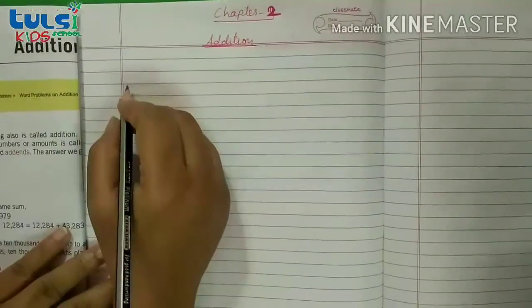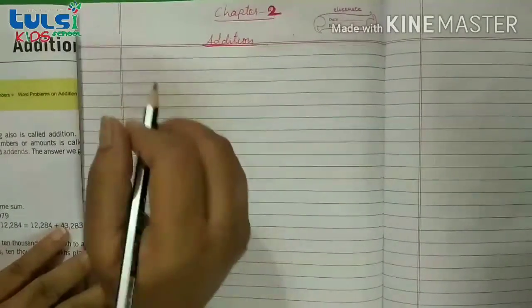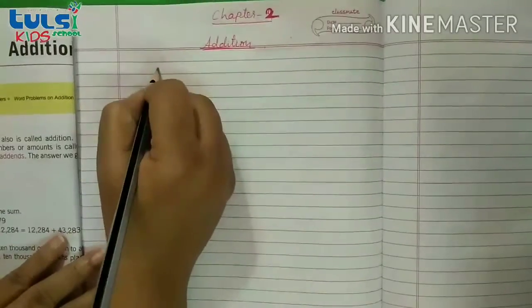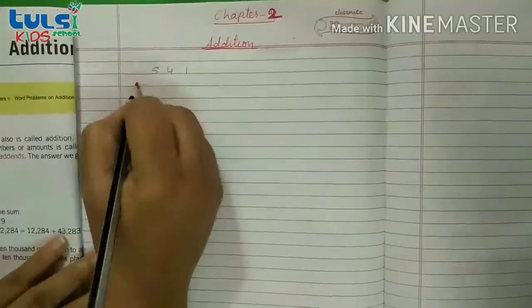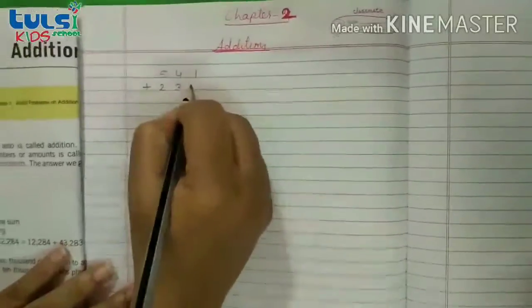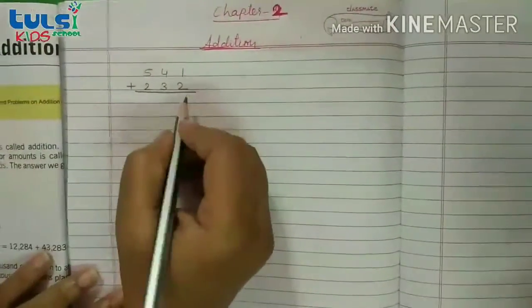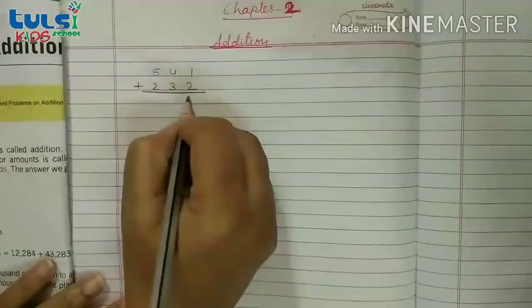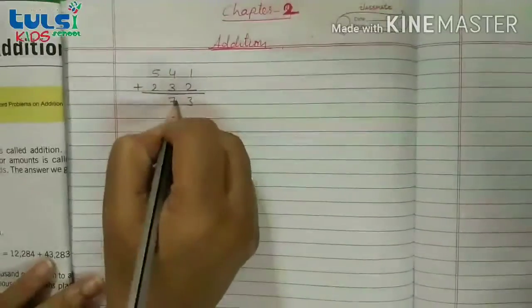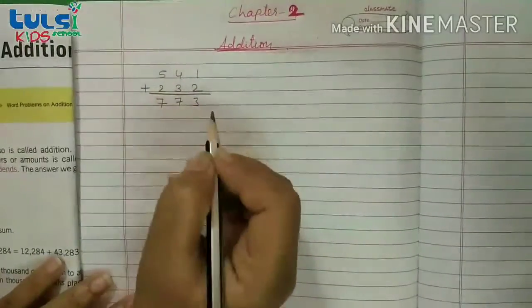Muchi pata hai ki aap log jaantay ho ki addition kaise karna hai. But fir bhi hum log kuch example ke through aage wadhte hai. So I'm writing here 541 plus 232. Now if we want to addition, then 2 plus 1 is 3, 4 plus 3 is 7, 5 plus 2 is 7, okay?